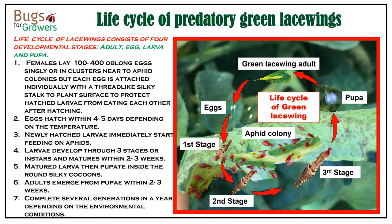The life cycle of predatory green lacewings is very simple. It consists of four developmental stages including adults, eggs, larvae, and pupae. Adult females, after mating, lay eggs in bunches or singly near to the aphid colonies on the leaf surfaces, stems, and twigs.